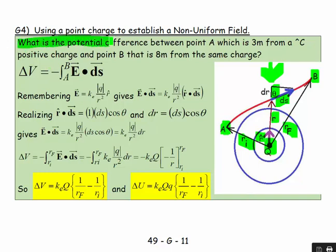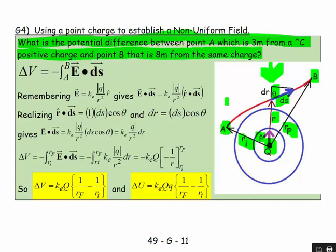What we're going to do is find the potential difference between point A, which is 3 meters from a Q coulomb positive charge, and point B, which is 8 meters from the same charge. We won't actually use these numbers yet, but I'll show that later. Let's put the quadrant in.